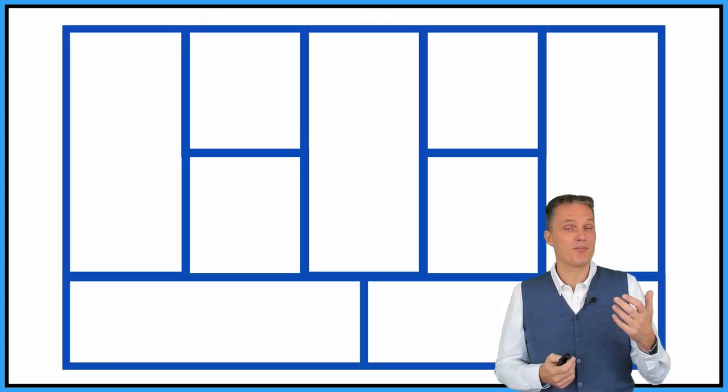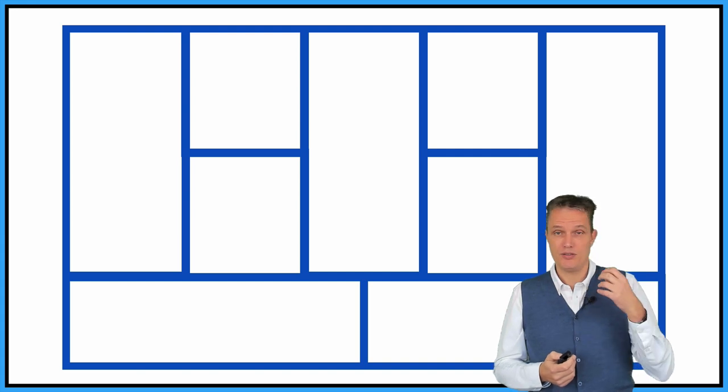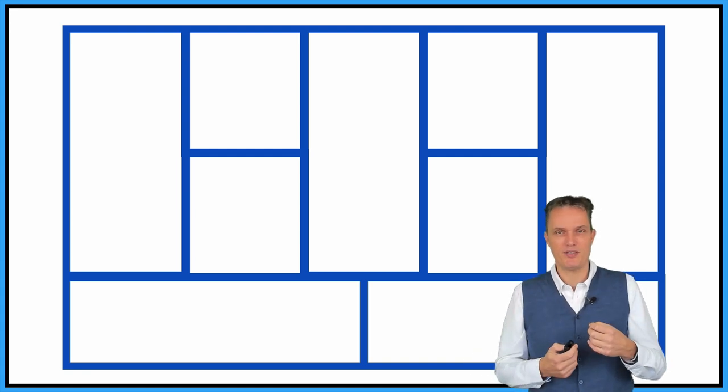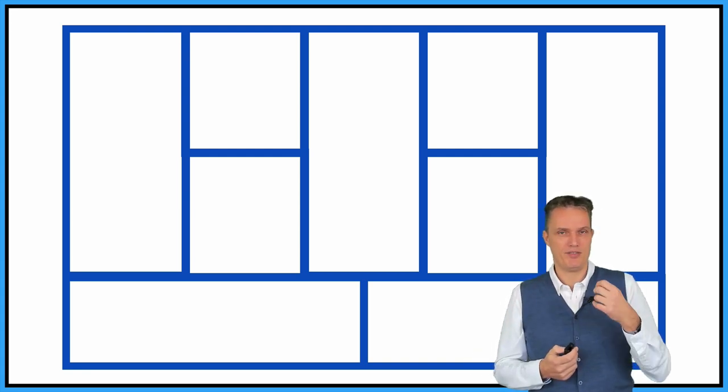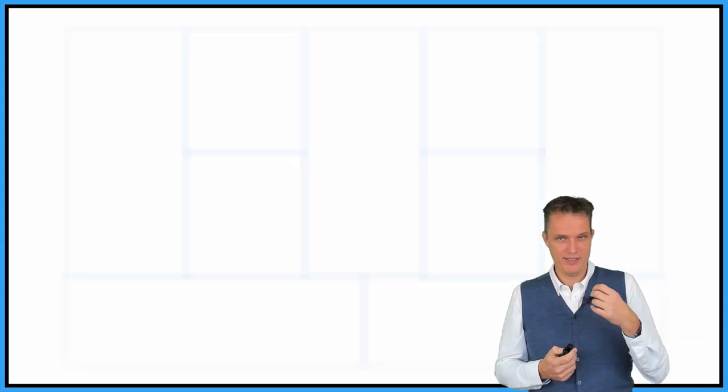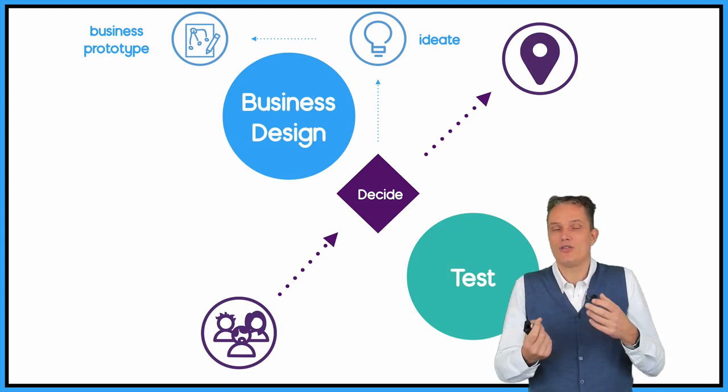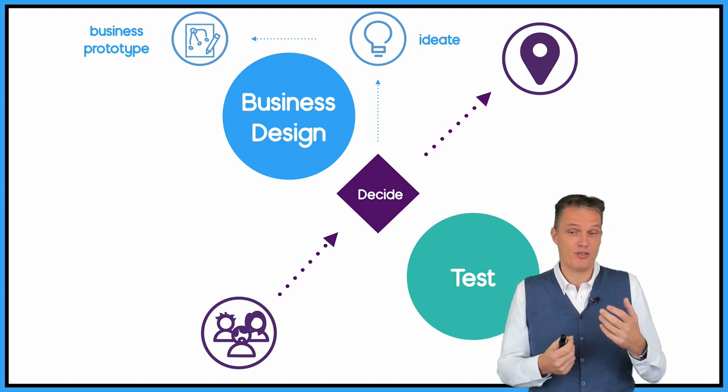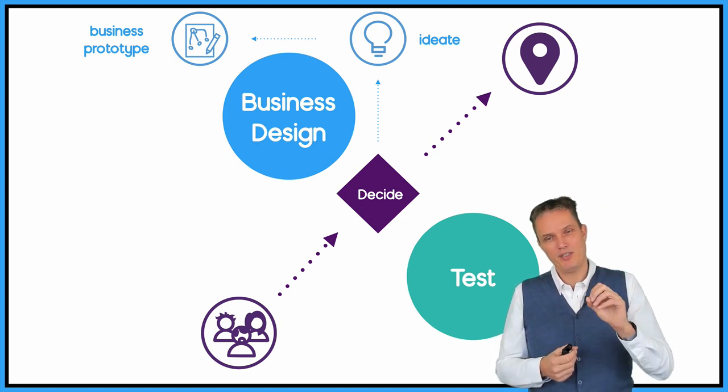You can use, for example, a business model canvas for that. So describe this business model canvas. What are the pains and the gains of your customers? What is your value proposition? So use this business model canvas and write down the idea inside the business model canvas. You can also use the value proposition canvas for that. Maybe that's even a better start. But put it on paper.